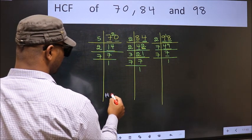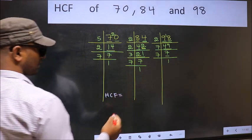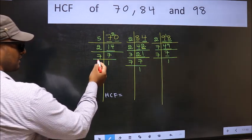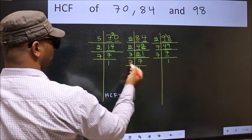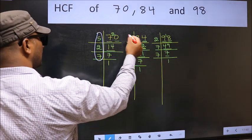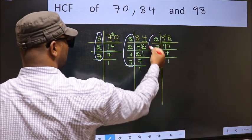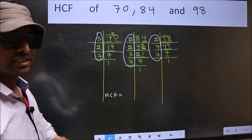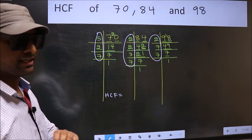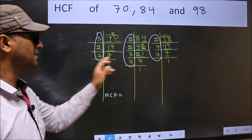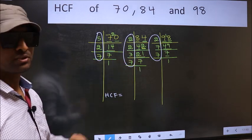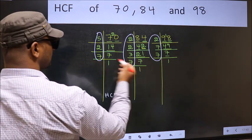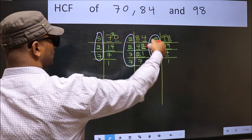Therefore, our HCF is the product of numbers which should be present in all three places. That is, here, here, and also here. I repeat, HCF is the product of numbers which should be present in these three places: here, here, and also here.